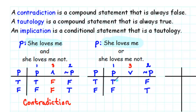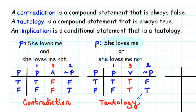In the first row we have true or false — that's true. False or true is also true, because we've got at least one true. So this time we get true in each case, and that means this is a tautology. The compound statement 'she loves me or she loves me not' is always true.